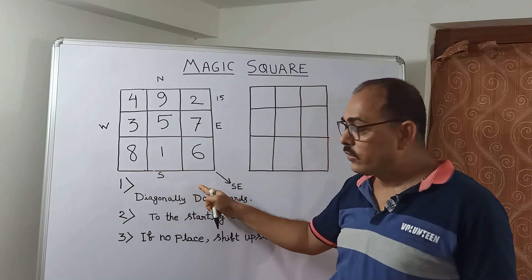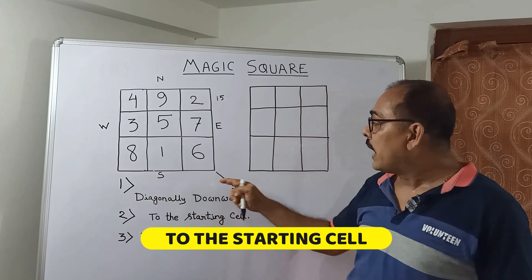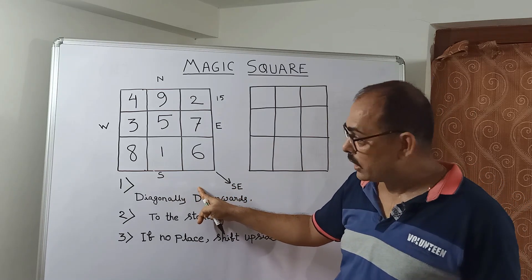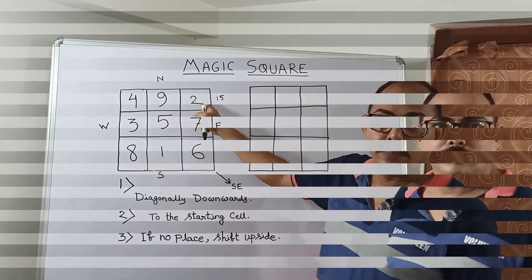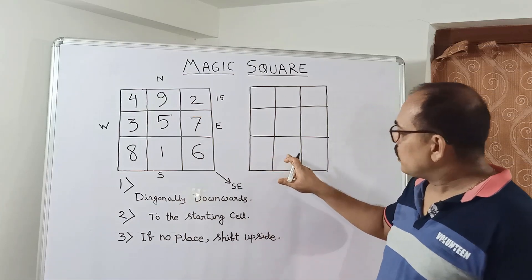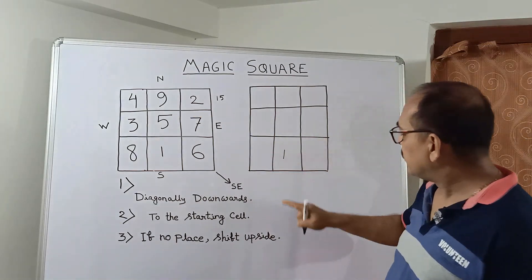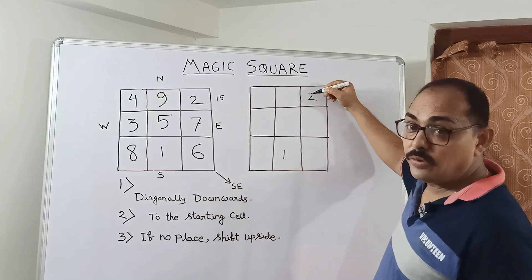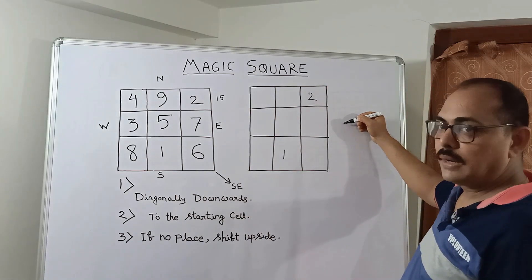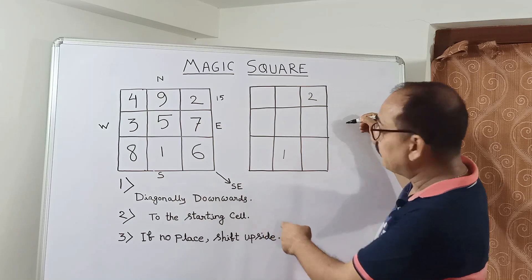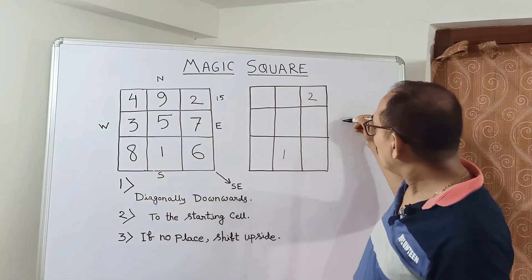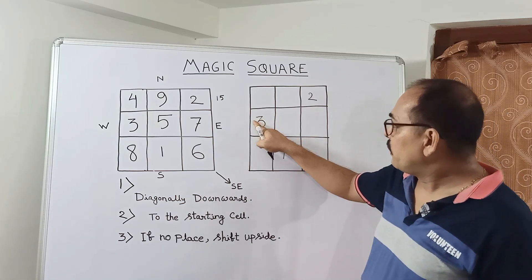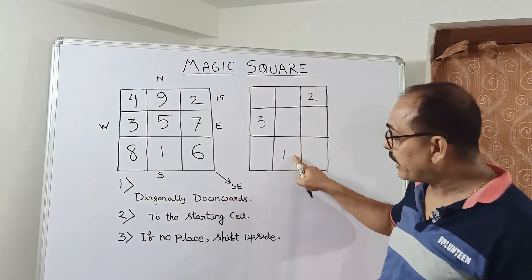But there is a problem — the number is going outside of the border line. If it goes outside the border line, then we have to follow the second rule: we have to go to the starting cell. So where should 2 be? It should be diagonally downward, but it is outside the border, so we go to the starting cell. Then where should 3 go? The basic rule says diagonally downwards, but again the same problem — it is outside the border line, so we place 3 at the starting cell.